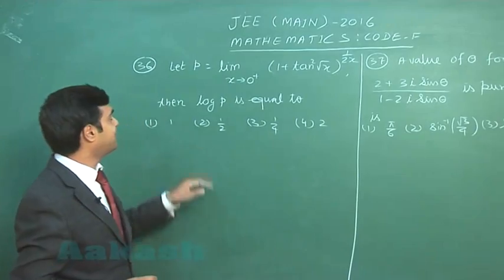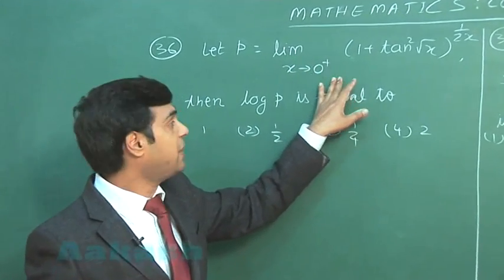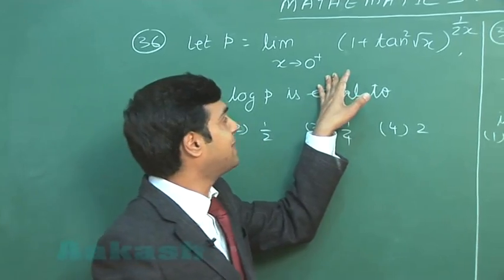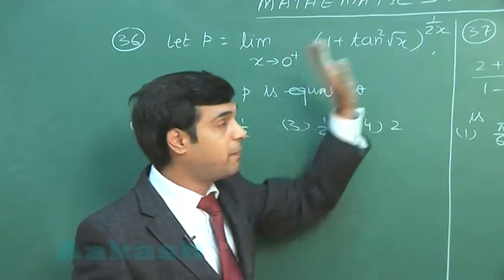Okay, the next one from calculus, the limit part. Let p equals limit x approaching 0 plus (1 + tan√x) raised to the power 1 by 2x.